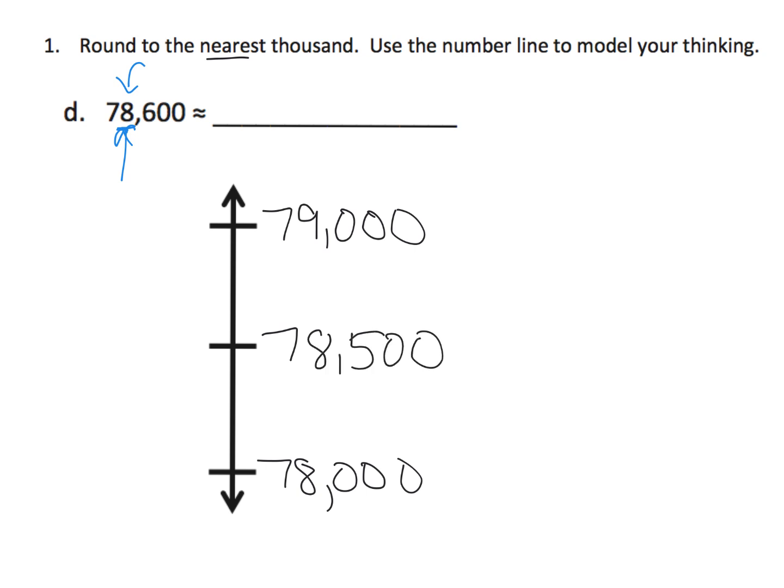Now that we've got our number line set up properly, we're going to write down 78,600. And now we have to decide, where does this number live? Does it live down here or does it live up here?